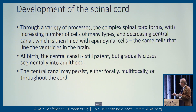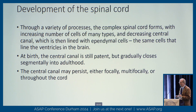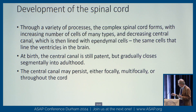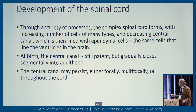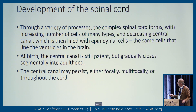That final canal is lined with ependymal cells — the same cells that line the ventricles in the brain. Initially this space is in communication with the ventricles of the brain, and that communication often gets lost. At birth the central canal is still patent, but gradually closes segmentally in adulthood. Importantly, parts of it may persist — focally or as multifocal areas throughout the cord.